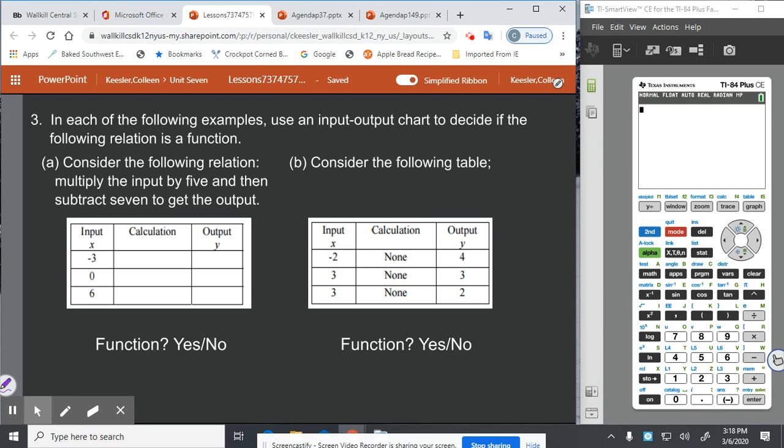So if I do five times the input, which is X, and then subtract seven, five times negative three is negative 15 minus seven is negative 22. If I do five times zero minus seven, I get zero minus seven is negative seven. And if I do five times six minus seven, I get 30 minus seven is 23.